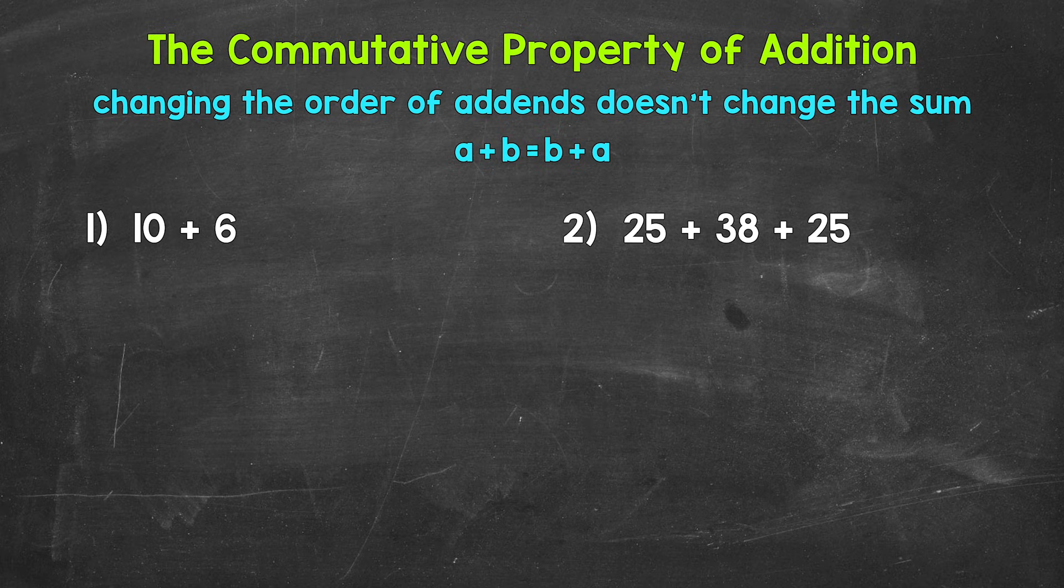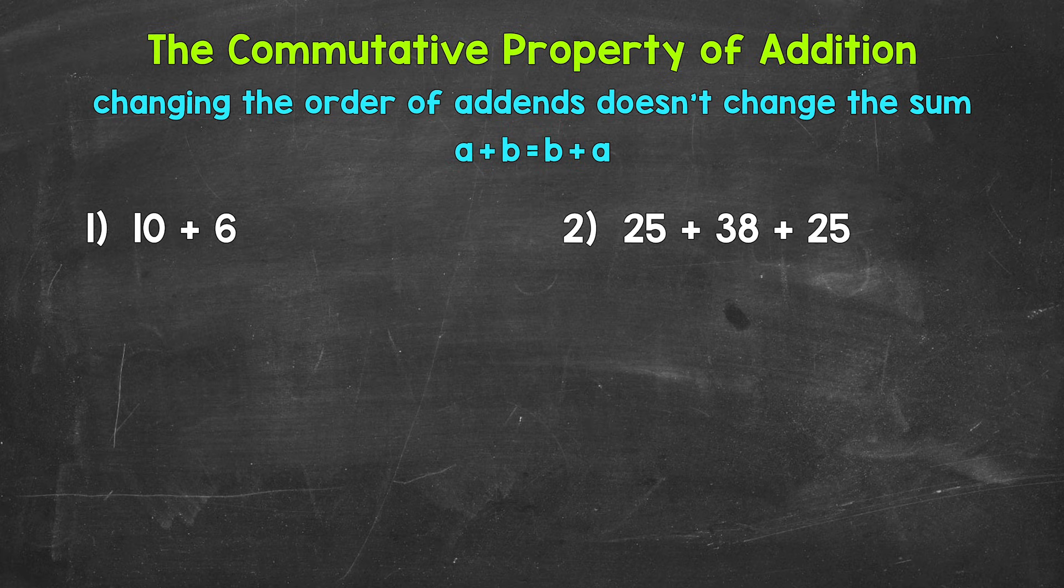The commutative property of addition states that changing the order of addends doesn't change the sum. Addends are the numbers being added together, and the sum is the answer to an addition problem.